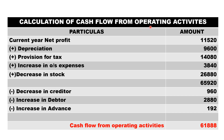Now calculate the cash flow from operating activity. Current year net profit eleven thousand five twenty — we have taken interim profit. Add: depreciation nine thousand six hundred deducted in the question. Add: provision for tax fourteen thousand eighty deducted in the question. Add: increase in outstanding expenses (liability). Add: decrease in stock (current asset). You get sixty five thousand nine twenty. Less: decrease in creditors (current liability). Less: increase in debtors (current asset). Less: increase in advance (current asset). So you get operating activity sixty one thousand eight eighty eight — a plus figure indicating inflow.